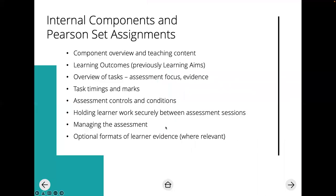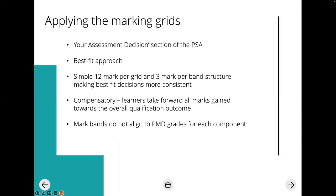That covers internal components and the set assignments. In terms of applying the mark grid: your assessment decision is in the PSA using a best-fit approach, a simple 12-mark grid with three marks per band structure, making decisions more consistent. We've talked about how it's compensatory and doesn't align to pass/merit/distinction. Learners come out of that assessment with a raw mark out of 60, and they can pick up those marks in different competencies depending on their skill set.